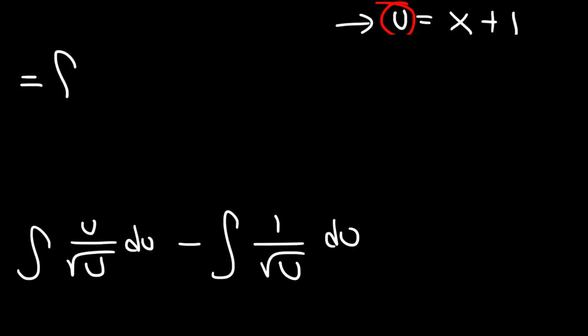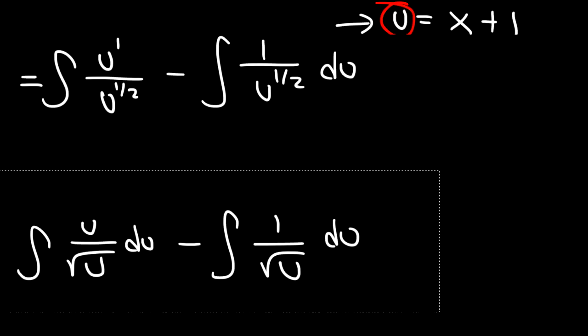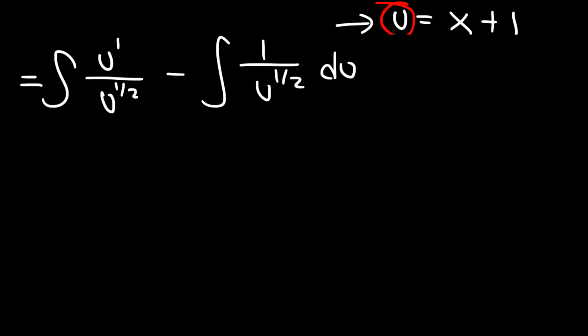So we can rewrite this as u to the 1, and the square root of u is just u to the half. Now u divided by u to the half. When dividing, you need to subtract the exponents. So it's going to be the top exponent minus the bottom one, and so 1 minus 1 half is just a half.